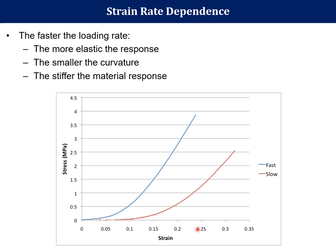Here is the stress and strain curve when a viscoelastic material was subjected to load at fast and slow strain rates. When the strain rate was fast, the deformation or strain is lesser — the material is more elastic. When it is slow, the strain increased, mainly due to addition of the viscous portion into the elastic portion. When it is slow, it is more ductile and its behaviour is more viscoelastic. When the strain loading rate is fast, the material is more elastic, the stress-strain curve curvature is small, and the material response is more brittle and stiffer.